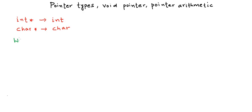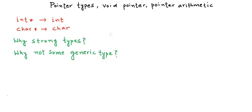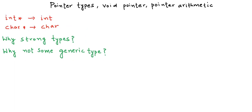But why do we need these strong types? Isn't it that the pointer variables just store the address of the variable? So why couldn't we have just one generic type to store the address of all kinds of variables? The answer is that we do not use the pointer variables only to store memory addresses, but we also use them to dereference these addresses so that we can access and modify the values in these addresses.